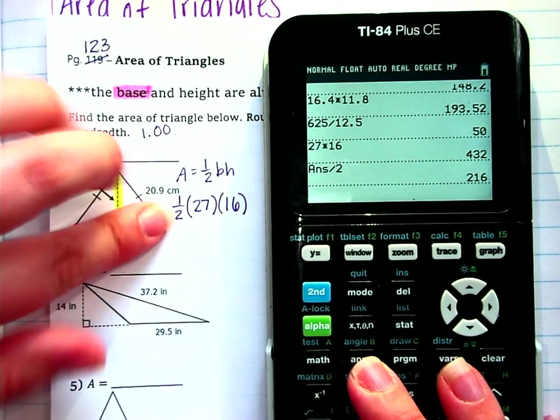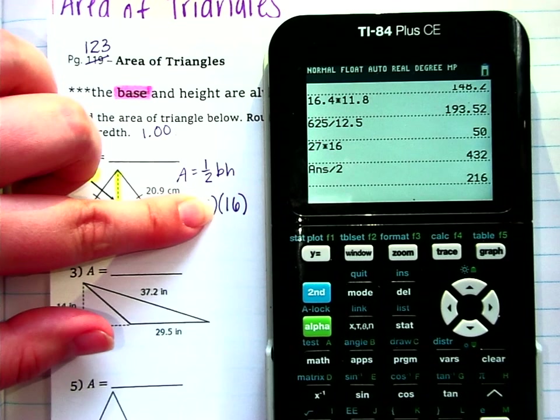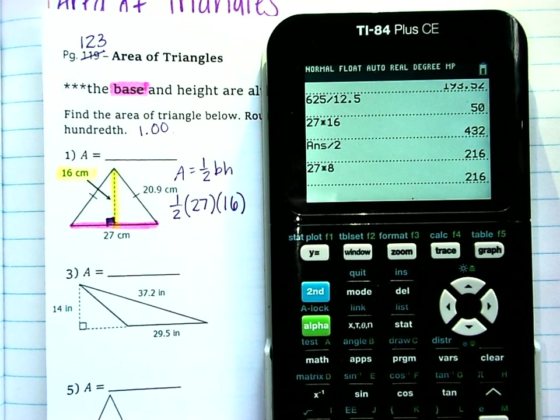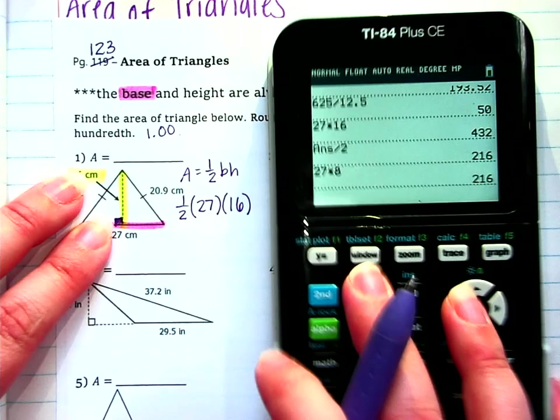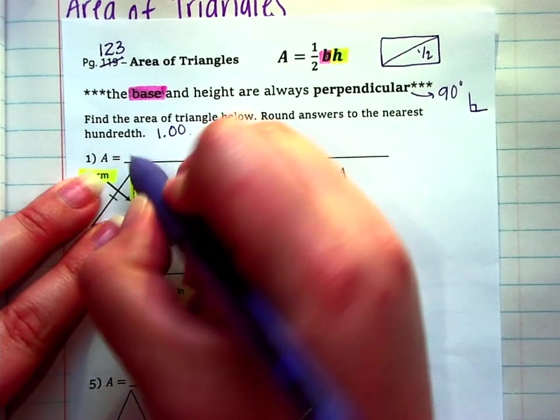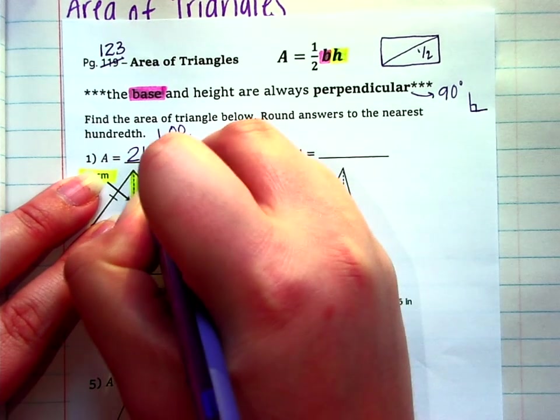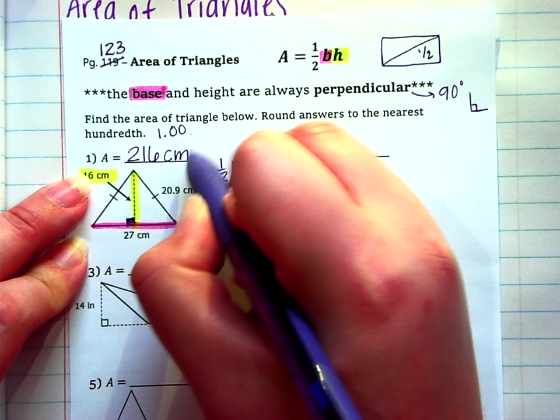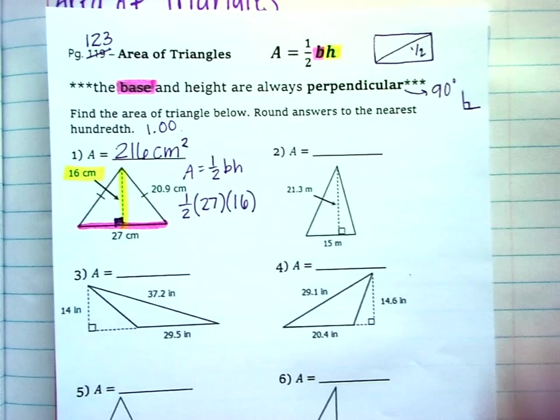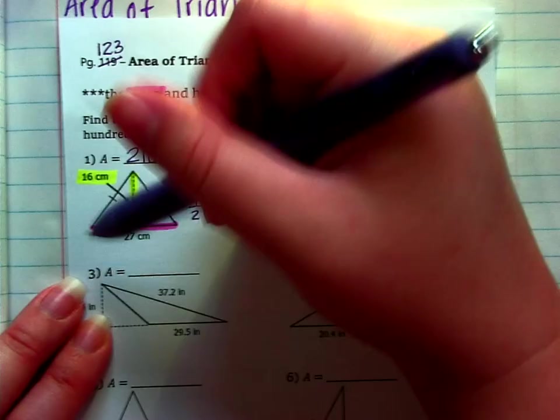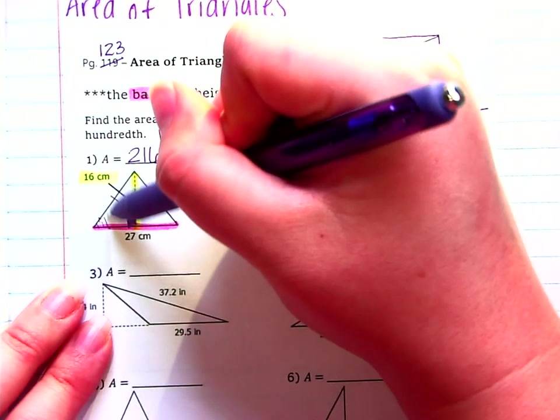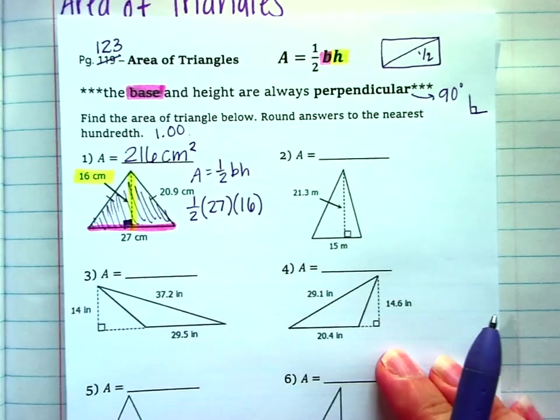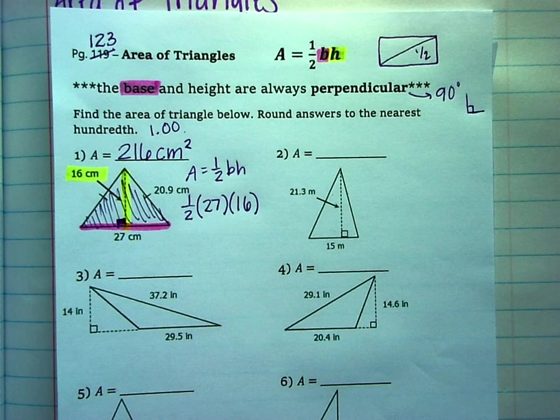Some people like to do mental math. So half of 16 is 8. So that leaves 27 times 8. So however you want to multiply the numbers together. Just make sure you do all three of them at one point. So we're going to do 216. No decimals here. And practice your units. This is centimeters squared because we just found the area. So it's all the space inside of the triangle. So it's squared.